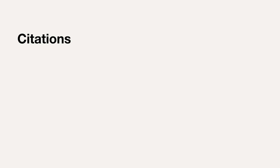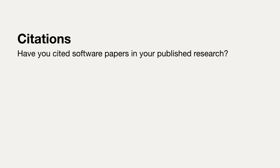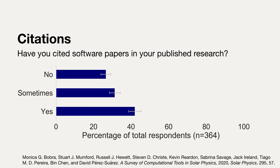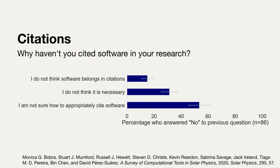Citations give you visibility by default — no academic community will ignore a highly cited paper. But the question is, will people cite scientific software? Here's another result from our community survey: we asked people if they had cited software papers in their published research, and only 40% said yes, and about 30% said no. But we found in a follow-up question that most people who don't cite scientific software simply don't know how — they're not opposed to it, they just don't know how. So it's important to be extremely clear about how to cite scientific software.